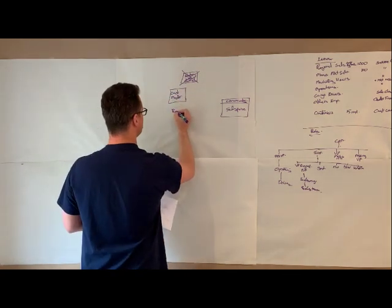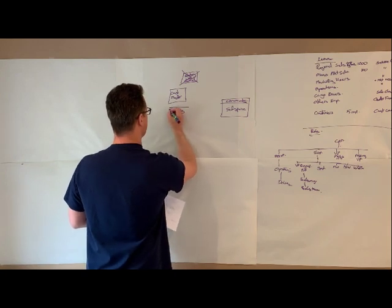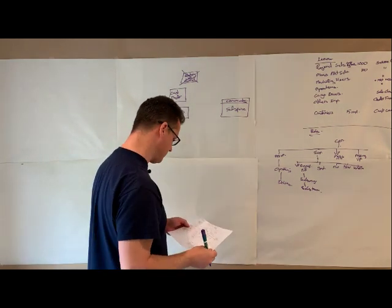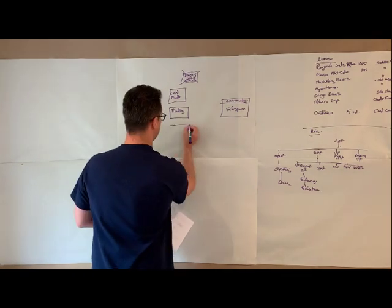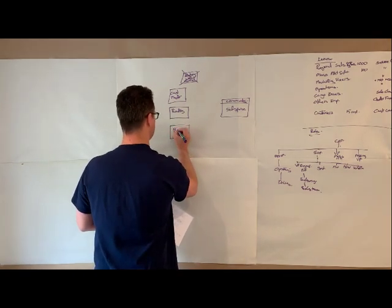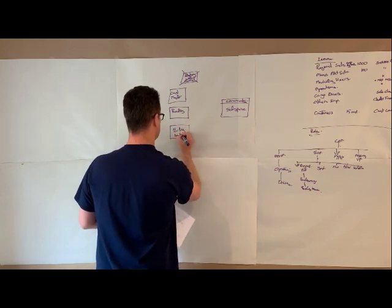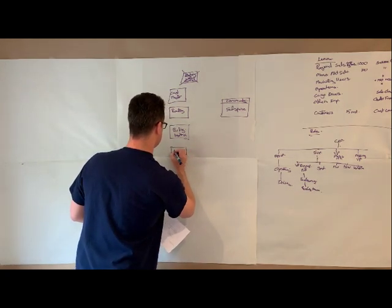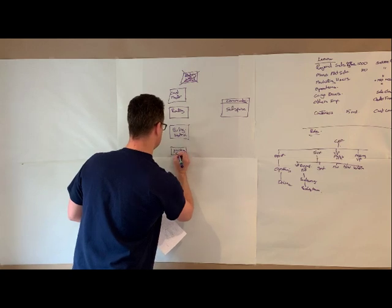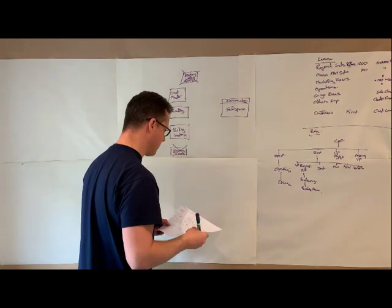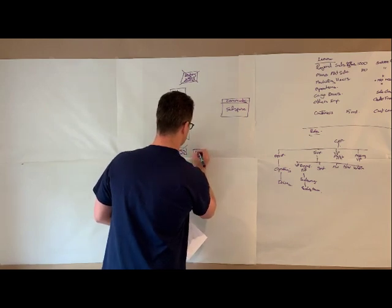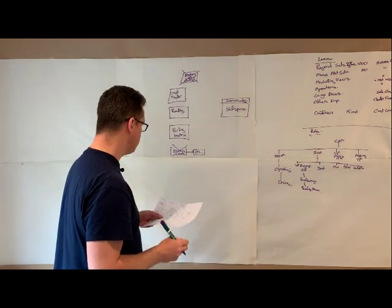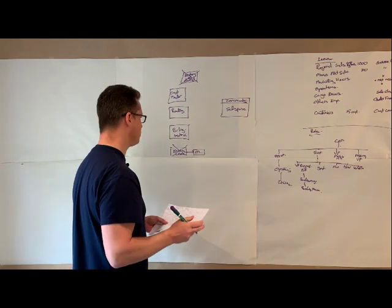In terms of other existing systems which will be retained: there is a customer master, a routing system containing algorithms and IP the business uses to set up delivery routes — this will be retained and interfaced with. They have a billing system based on NetSuite that will be retained. Their existing CRM will be replaced and migrated to Salesforce through an ETL tool.